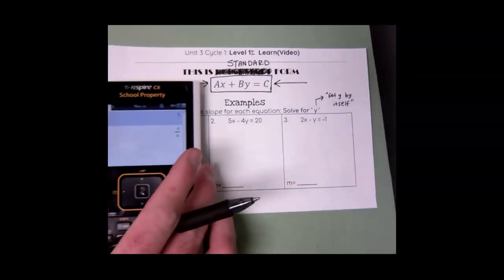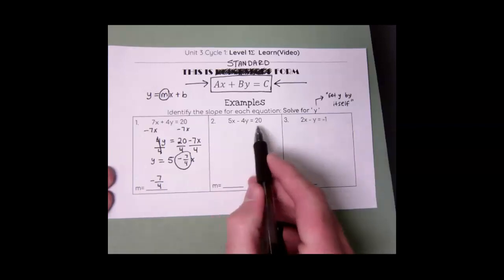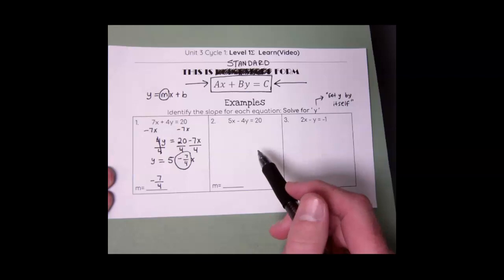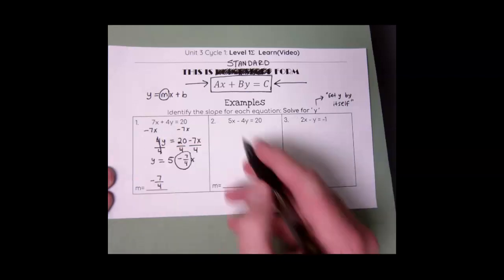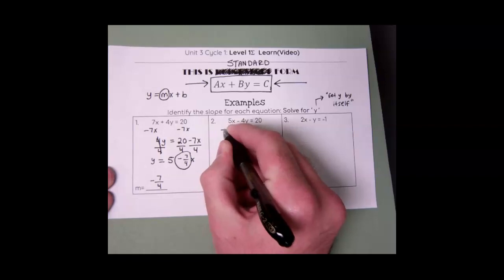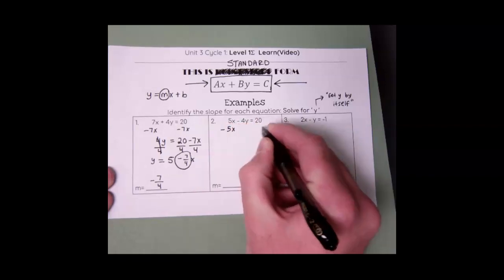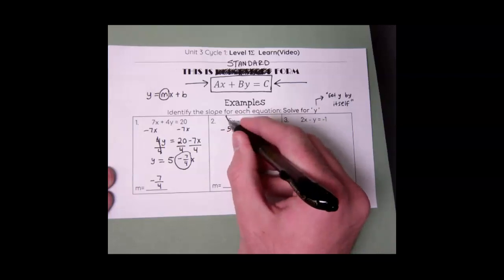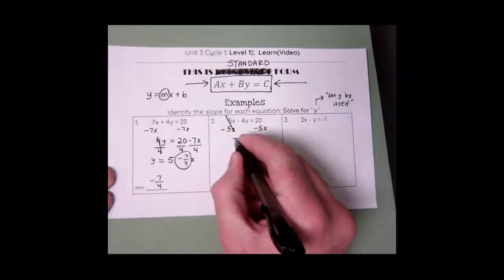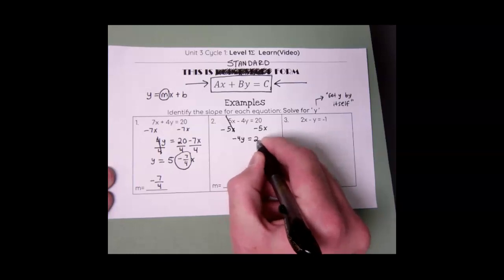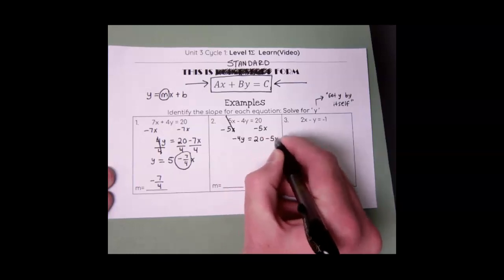Let's try another example. Number 2: 5x minus 4y equals 20. I need to get y by itself — I'm solving for y. My first step, just like the first example, is to get x over to the right side. So I'm going to subtract 5x from both sides, and this all goes away. So I'm left with negative 4y equals 20 minus 5x.